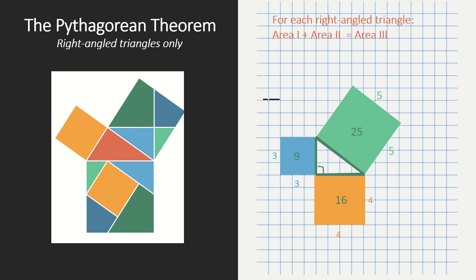So for each right-angled triangle, area 1 plus area 2 equals area 3. The small area plus another small area equals the big area. We can see that here as well, since 9 plus 16 equals 25.